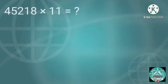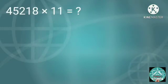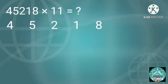How to multiply 45,218 by 11? We'll write the answer from the right side. From the right side, write the last digit of the number, that is 8.